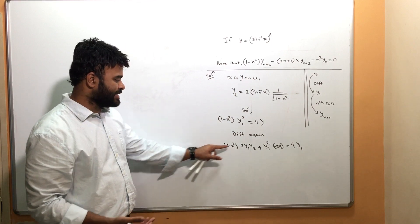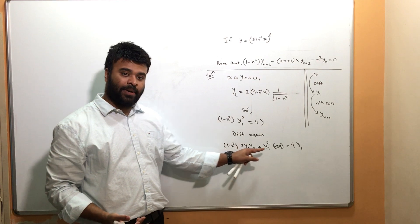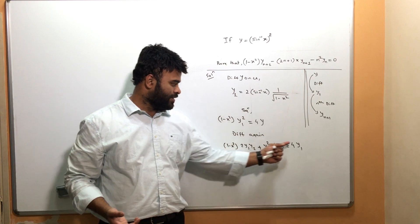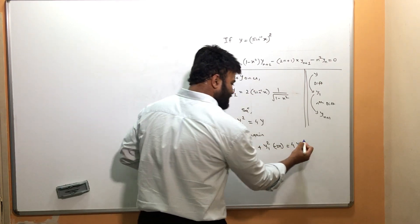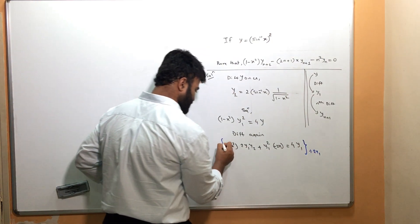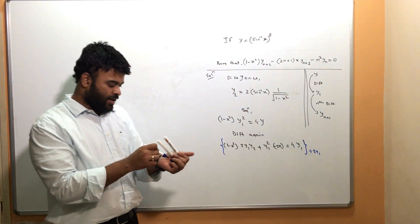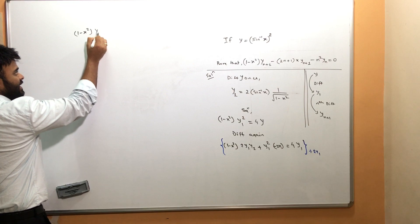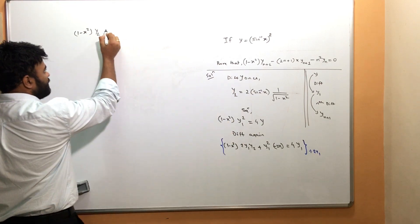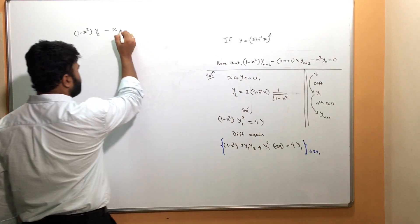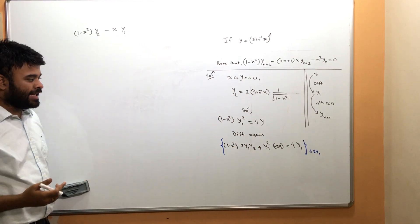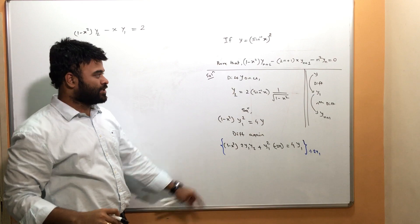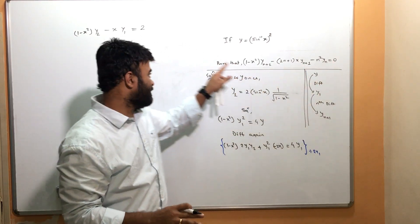Now observe that 2y₁ is a common factor in every term. Dividing the entire equation by 2y₁, we get: (1-x²)·y₂ - x·y₁ - 2 = 0. We're happy because we have 0 on the right-hand side, which means any further differentiation of the right side will also give 0.